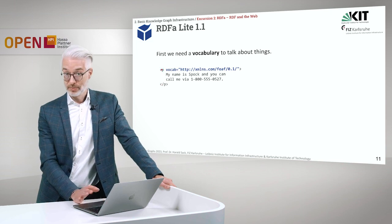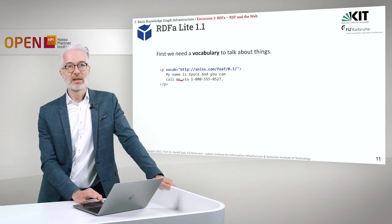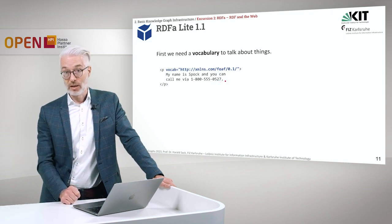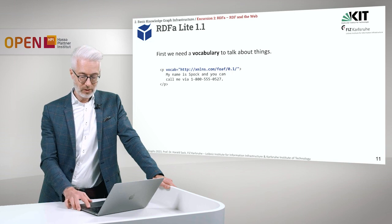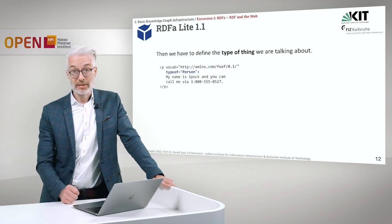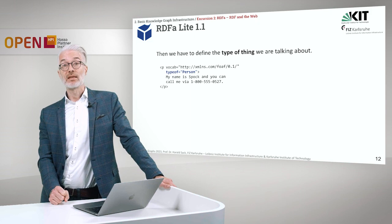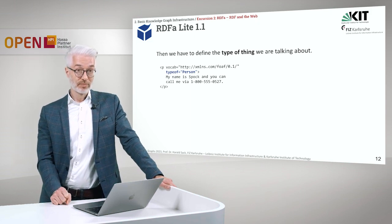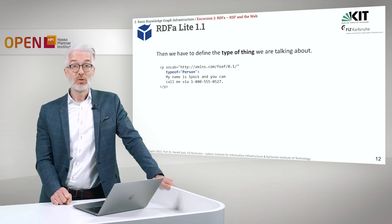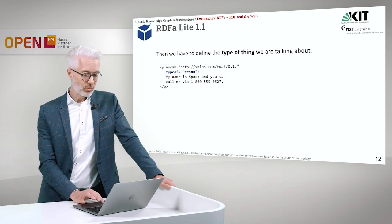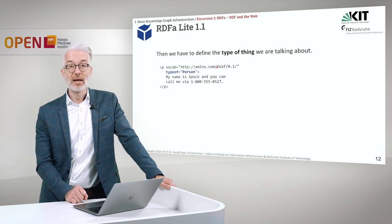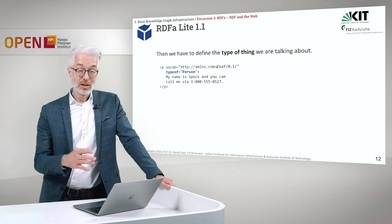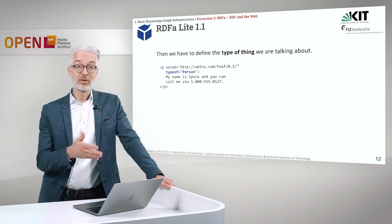So we have a paragraph: 'My name is Spock, and you can call me via' — and then an imaginary phone number. Next, we have to define the type of thing we are talking about in that paragraph. We want to talk about a person — a FOAF person. So typeof will be 'Person', and of course this Person class comes from the FOAF vocabulary that we have declared. So we are talking about data that refers to a FOAF person.